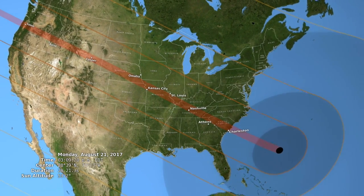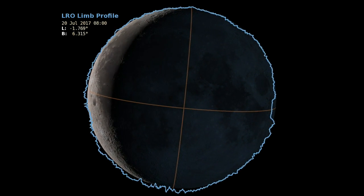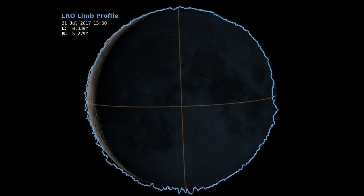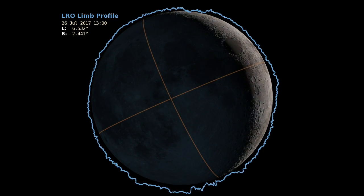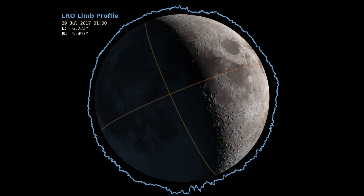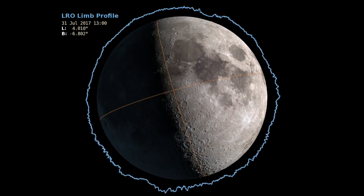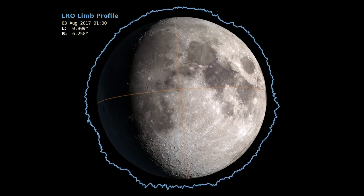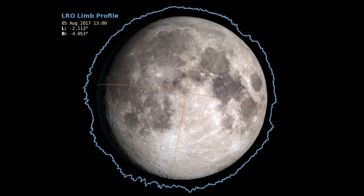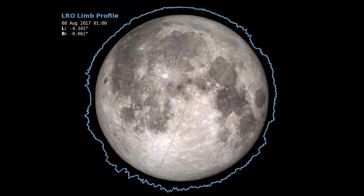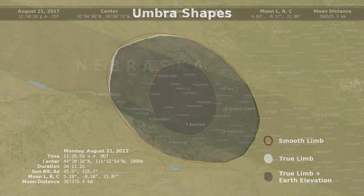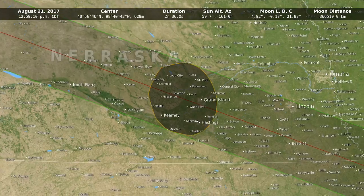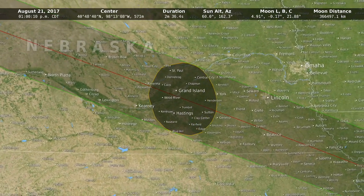Around the edge of the moon, we have these jagged peaks and valleys, and a peak can block the sun a little bit earlier than you thought, and a valley can let the sun in a few seconds longer than you thought. The combined effect of these peaks and valleys is to create a shape that's not really an oval — it's more like a polygon. But it hasn't actually been seen in exactly this way before, where we calculate those circumstances for every point on the map and draw that shape.